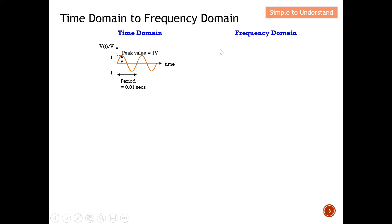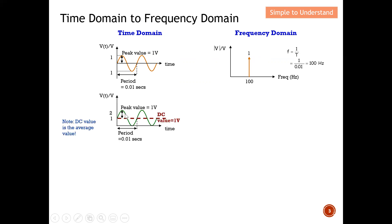Before the examples, let's do a quick review of how time domain is converted to frequency domain. Here is a signal given in time domain — a sine wave that changes with time, having a period and a peak value. To draw the frequency domain, I compute the frequency as one over the period, which gives 100 Hz. In the frequency domain, at 100 Hz I draw a bar of one volt, matching the peak value. Next, a similar sine wave but with a DC component of one volt added.